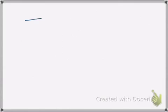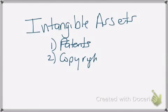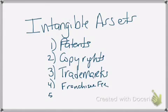The last asset category is intangible assets. These are items that do not have a physical substance but can be very valuable. They include things like patents, copyrights, trademarks, and franchise fees. For example, if you opened a McDonald's, your franchise fee would be part of an intangible asset. Another item you can see here is goodwill — this is when we purchase a business and pay more than what the assets are actually worth, because we're paying for the name.